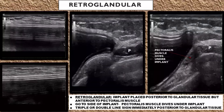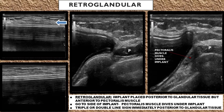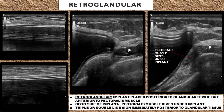Here are some ultrasound images of a retroglandular implant placement. This is where the implant is placed posterior to the glandular tissue layer but anterior to the pectoralis muscle. With this type of placement, it can be really hard to see the fibrous capsule in the anterior section of the implant because it blends in with the echogenic fibrous tissue.